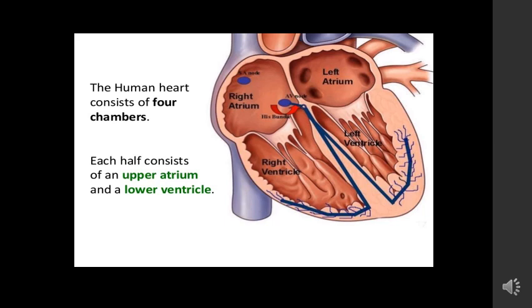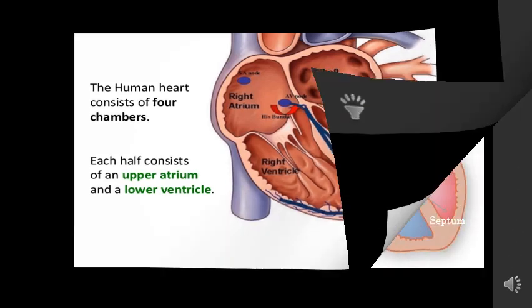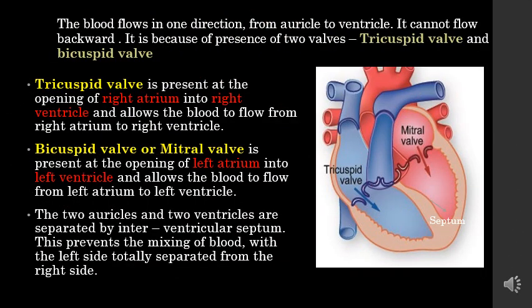Note that the ventricles have much thicker walls than the auricles. The flow of blood in the heart is unidirectional — blood flows in one direction only, from auricle to ventricle, and it cannot flow backward.